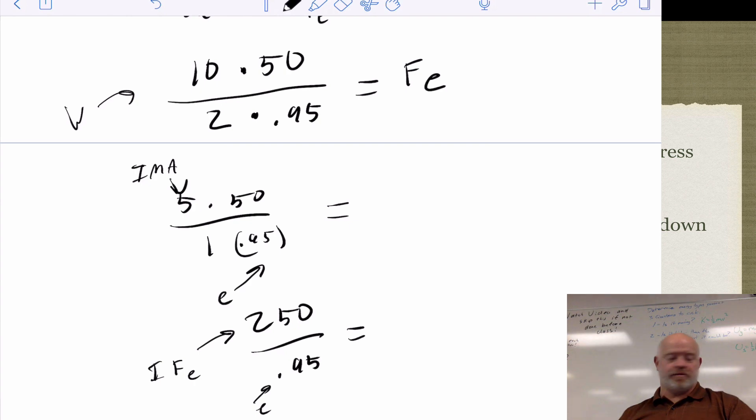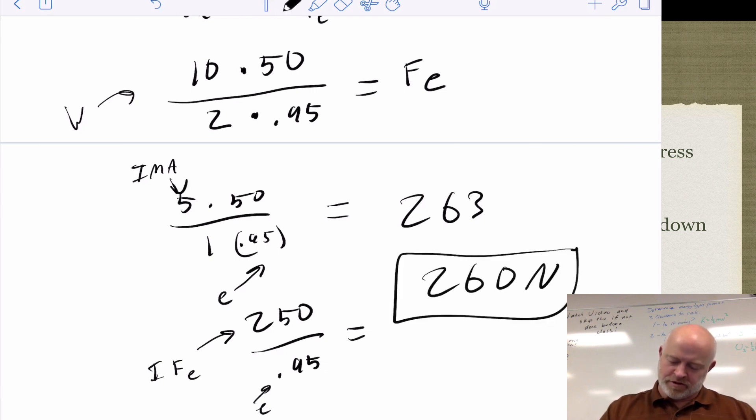So if we take this and we plug it in, this one I haven't solved yet. Take 250 divided by 0.95, and I get 263 point something something something. I only have two sig figs here, so I'm going to say it's going to take me 260 newtons of force to do this. And that's just one way we can deal with efficiencies.